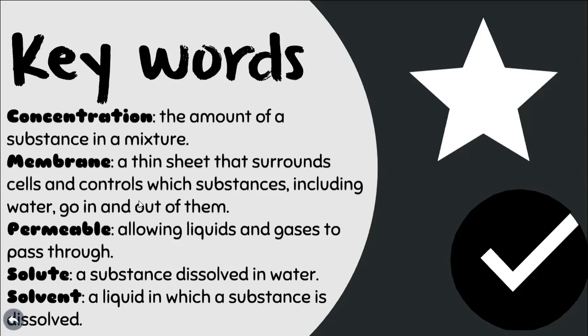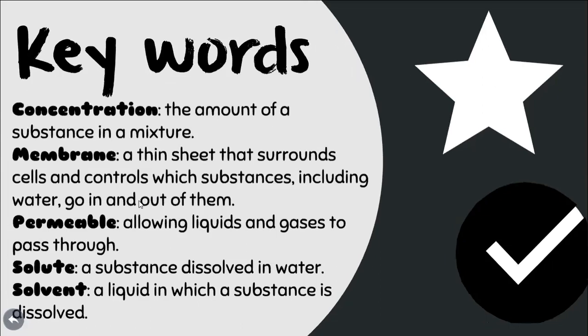Permeable means that it allows liquids and gases — and maybe small particles — to pass through. Solute is a substance dissolved in water, and solvent is the liquid in which a substance is dissolved. For example, if you have water and sugar, water is the solvent and sugar is the solute.